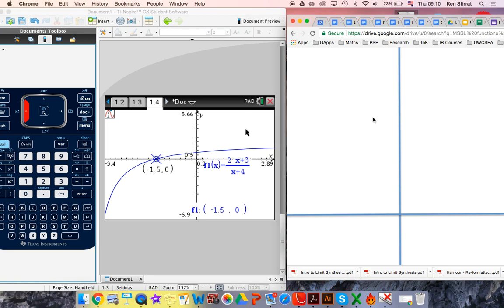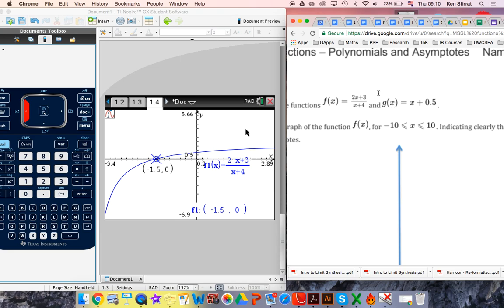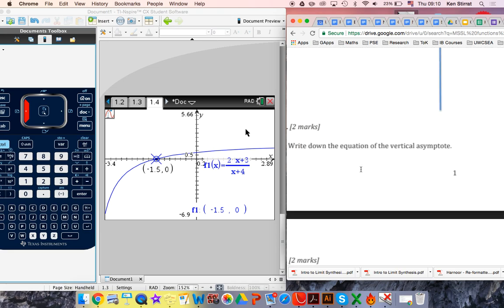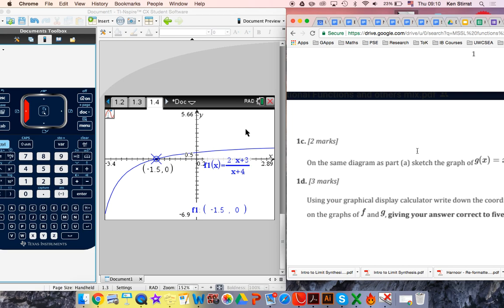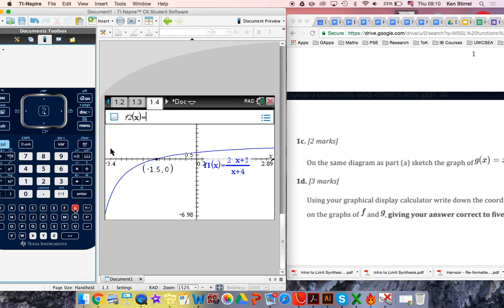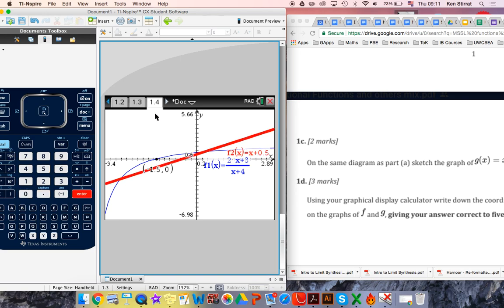Okay. So what else do we need to do with this graph? That's pretty much it for the sketch. Let's go on to the next part. The equation of the vertical asymptote, x equals negative 4. On the same diagram sketch g of x equals x plus 5. Control G is a shortcut to the graph entry. x plus 0.5. X plus 0.5. Beautiful.